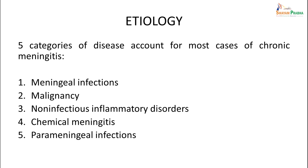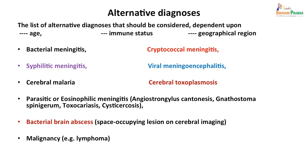Etiologically, five categories account for most cases of chronic meningitis: meningeal infections, malignancy, non-infectious inflammatory disorders, chemical meningitis, or parameningeal infections. Important infections to consider for differential diagnosis include acute bacterial meningitis gone chronic, cryptococcal meningitis, syphilitic meningitis, viral meningoencephalitis, cerebral malaria, cerebral toxoplasmosis, parasitic or eosinophilic meningitis, bacterial brain abscess, or malignancy such as lymphoma.